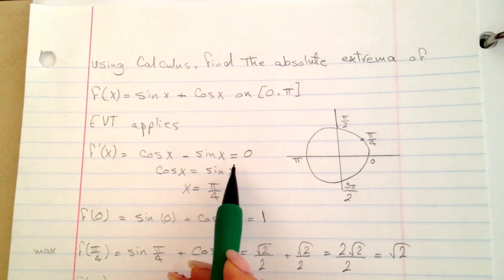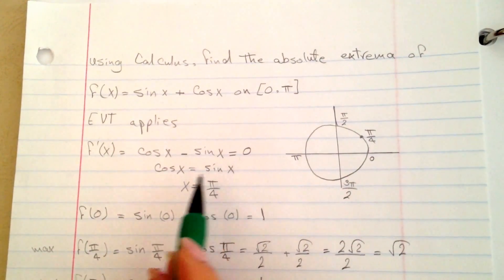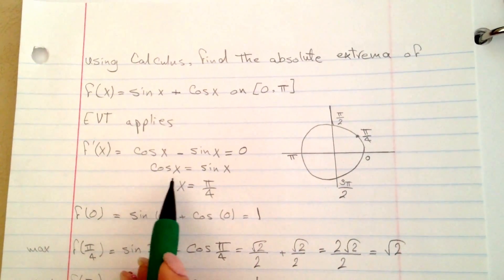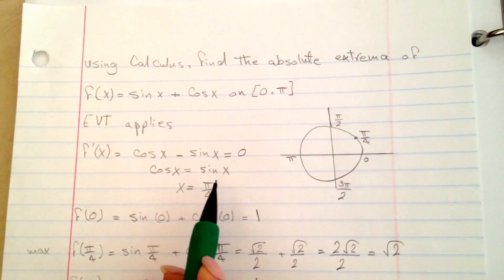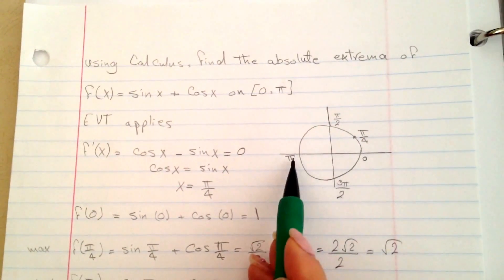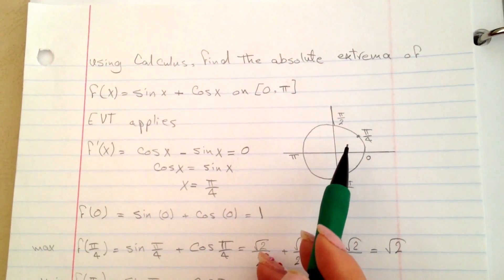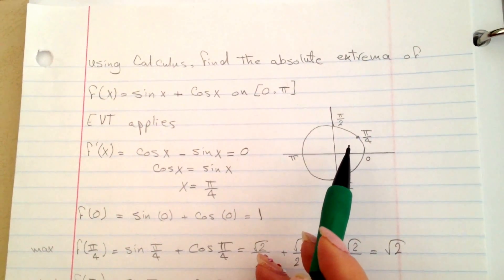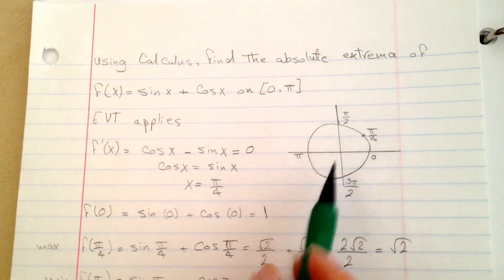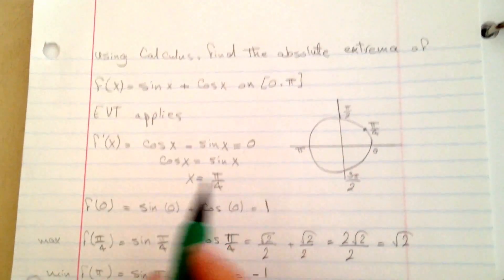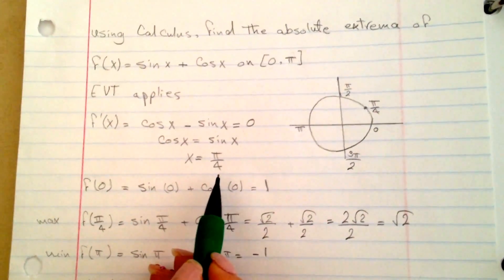We're going to set it equal to 0. So we have cosine of x equals sine of x. Between 0 and pi, we have to find a number where cosine and sine are the same. So it is pi over 4 — x equals pi over 4.